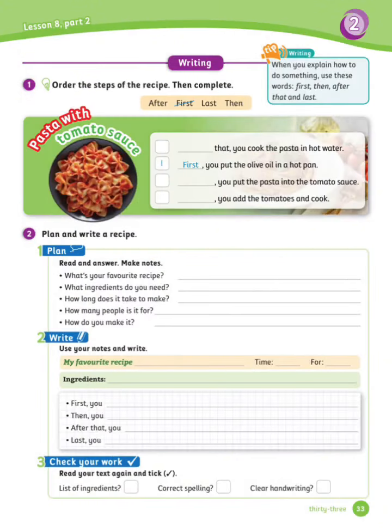Lesson 8, Part 2 — Writing. Exercise number 1: Order the steps of the recipe, then complete. Use the words in the box above to help you. Let's see the answers. Number 1 is done for you: First, you put the olive oil in a hot pan.